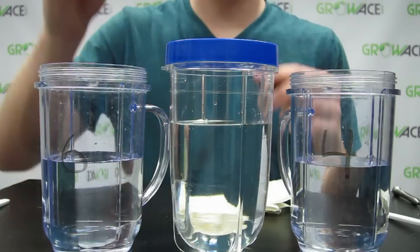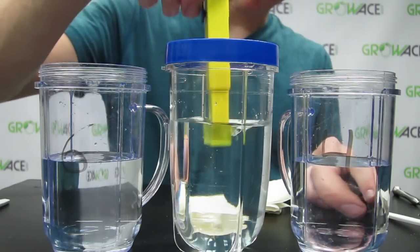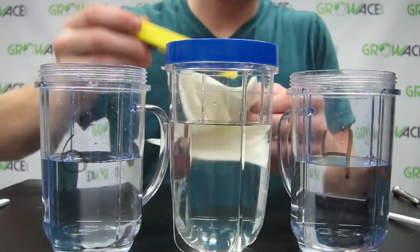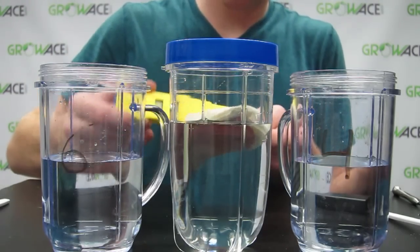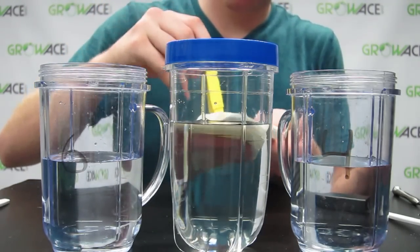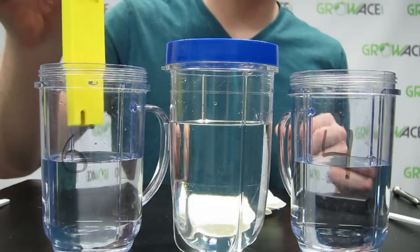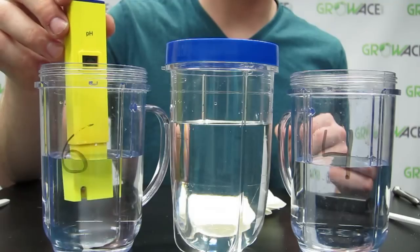Grab the pH meter, remove the cap, and gently rinse the electrode with the distilled water and dab it dry. Turn the meter on and dip into 6.86 pH solution. Wait for the reading to stabilize.